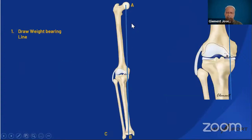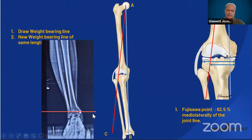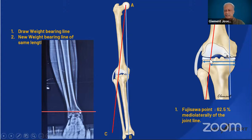In the Miniachi technique, first draw the current weight-bearing line. The next step is to draw the intended new weight-bearing line — going near the 60% mark. It is critical that this new weight-bearing line is the same length as the original. You draw a line from the ankle joint line and project it so that the new weight-bearing line touches that ankle joint line, shifting the weight-bearing line further laterally depending on the extent of cartilage wear.